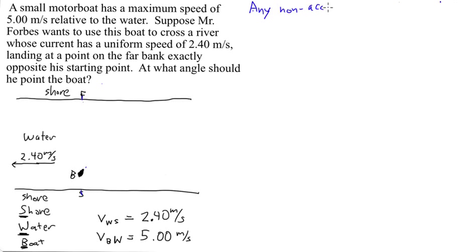Non-accelerating frame. So what we can do instead of acting as though the shore is stationary and the water is moving at a constant speed of 2.40 meters per second, we are going to actually act as though the water is stationary and now the shore is moving at a speed of 2.40 meters per second. And what that really means, for our purposes, is that instead of the target point and start point being stationary, they're actually moving.